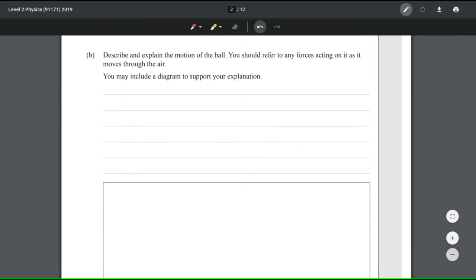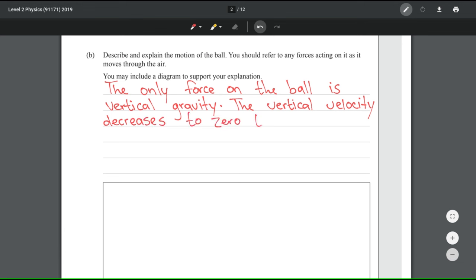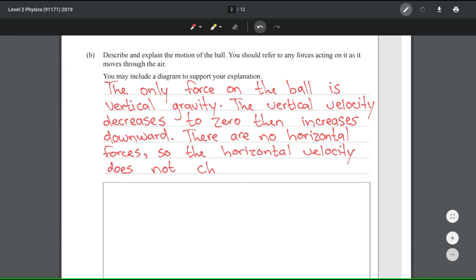Describe and explain the motion of the ball. You should refer to any forces acting on it as it moves through the air and you may include a diagram to support your explanation. First of all, the only force acting on the ball once it's in motion is gravity. So the only force on the ball is vertical gravity. The vertical velocity decreases to zero, then increases downward. There are no horizontal forces, so the horizontal velocity does not change.